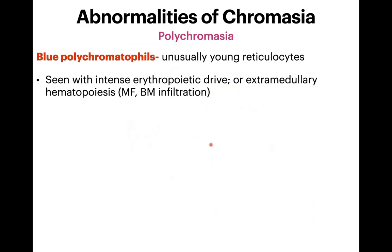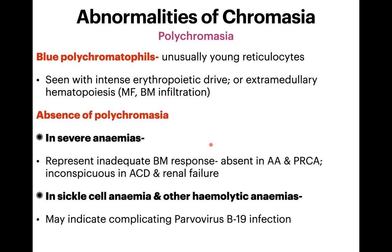There are two special situations regarding polychromasia. First, blue polychromatophils indicate unusually young reticulocytes with very high RNA content. Normal polychromatophils are pinkish-blue, but deeply blue ones are seen with intense erythropoietic drive such as acute hemolytic crisis or extramedullary hematopoiesis in myelofibrosis and bone marrow infiltration. Second, the absence of polychromasia when it should be present indicates bone marrow failure — in severe anemia with no polychromatophils, consider aplastic anemia or pure red cell aplasia.